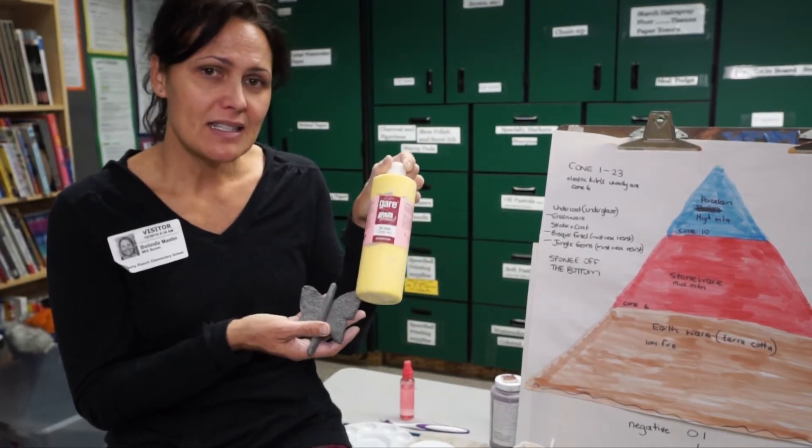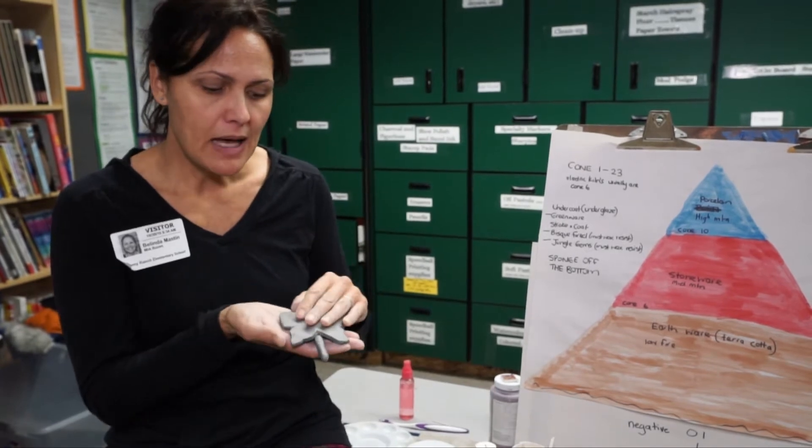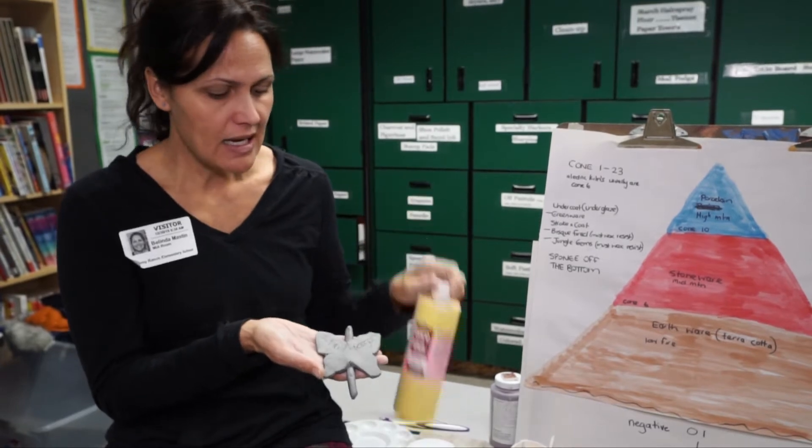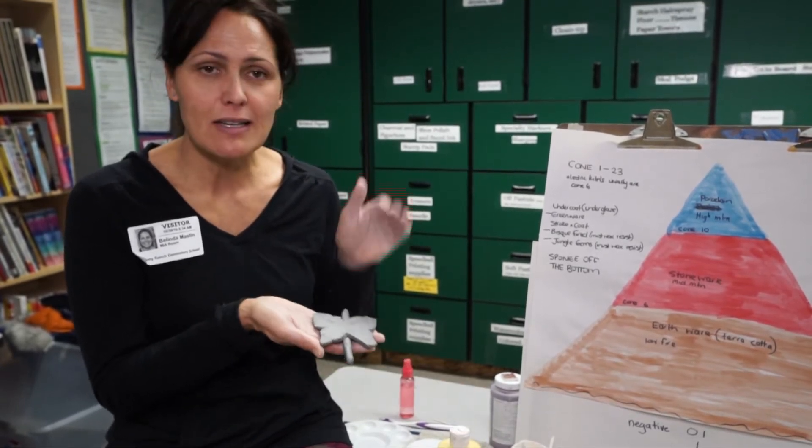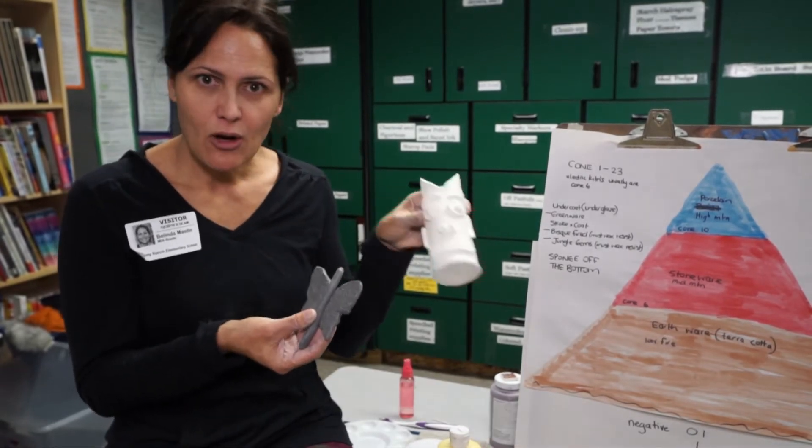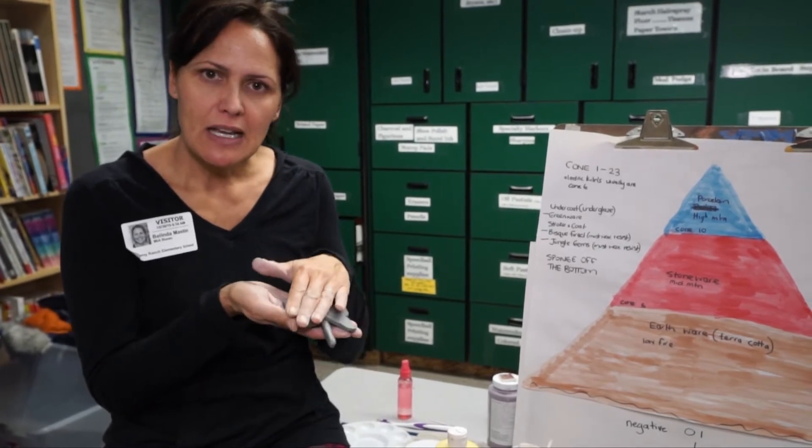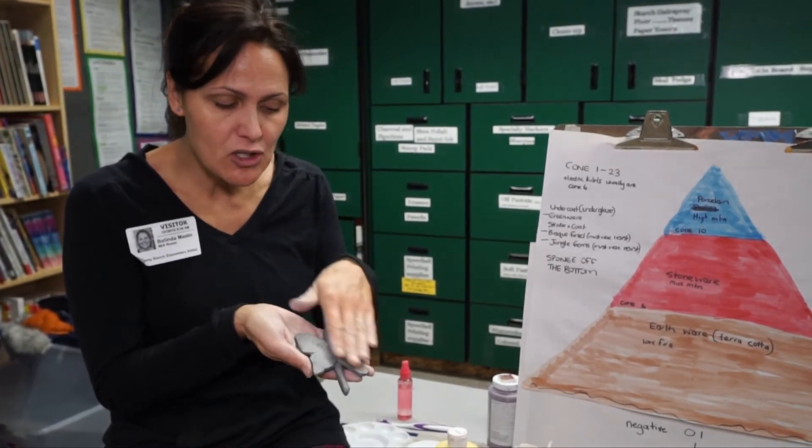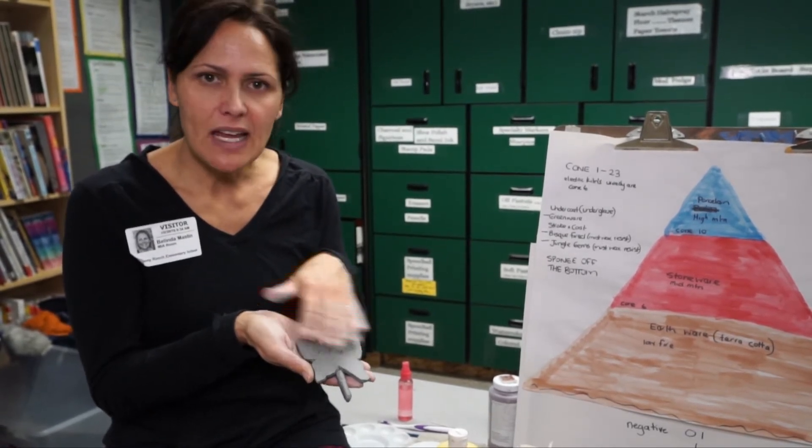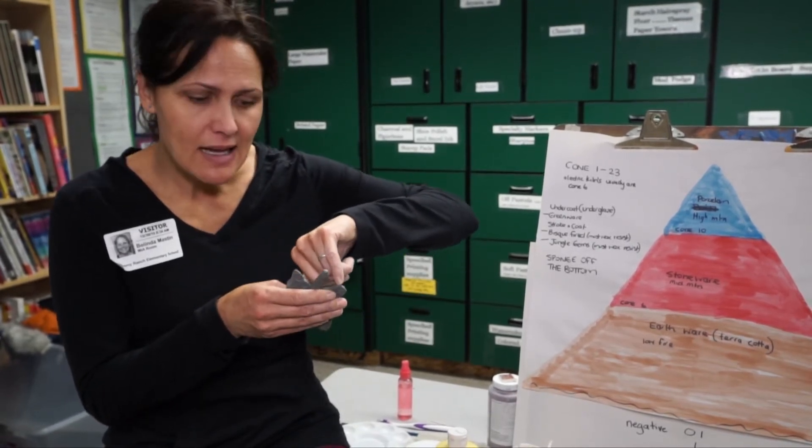Another thing is, this product is designed to be put on the whole entire piece including the bottom. But we have found from time to time it has stuck to the kiln shelf. Hence the reason why we now make sure every single piece of clay, whether it's greenware, bisque, or whatever, always has the sponge. The volunteer parent will go ahead and sponge off the bottom and make sure that there is no glaze of any sort on the bottom of the product.